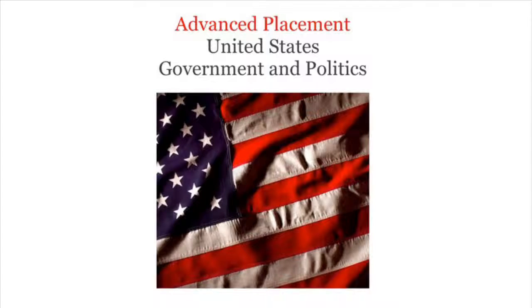Cloture. The standing rules in the Senate permit unlimited debate and amendments, and there is no requirement that speeches or amendments be relevant to the subject matter of the original bill. A motion for cloture is the only way to end debate and call for a final up-or-down vote, and it requires the approval of three-fifths of the full Senate. Because a majority party rarely holds that many seats, the minority party can often postpone the final vote on a bill through a process known as filibustering. During a filibuster, senators use their unlimited speaking time to extend debate indefinitely for a bill they do not support. The only way to end the filibuster is through a successful cloture motion.